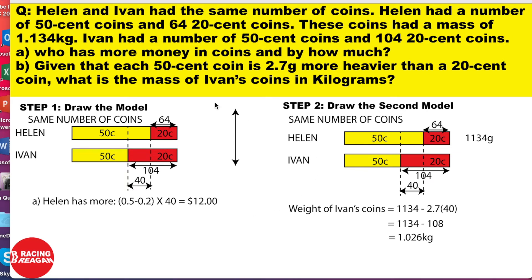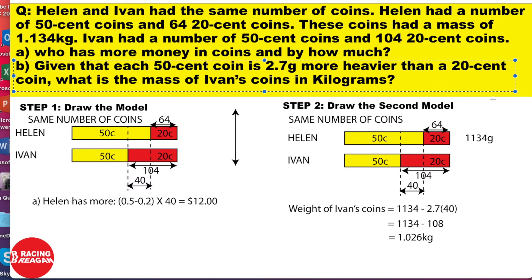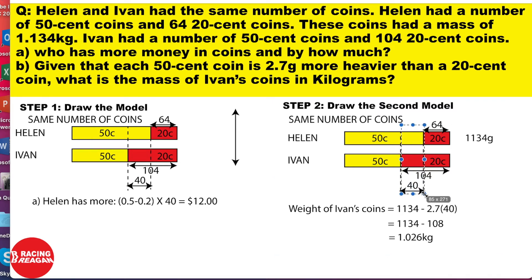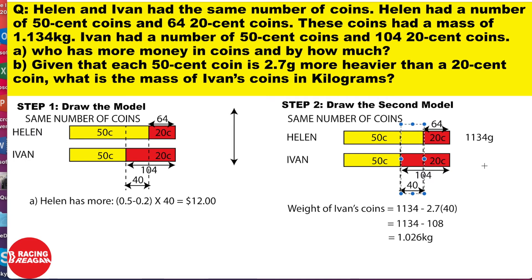Now let's go to Part B, which is actually easier than Part A. They say: given that each 50-cent coin is 2.7 grams heavier than a 20-cent coin, what is the mass of Ivan's coins in kilograms? For Part B, you can use the same model from Part A. The fact that there are 40 extra 50-cent coins from the earlier step is very important for finding Ivan's coin mass. If you don't have that in your model it will take much longer to solve.